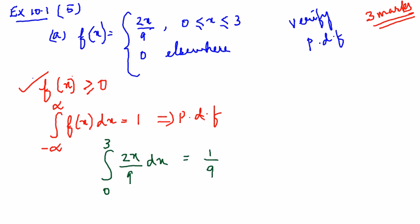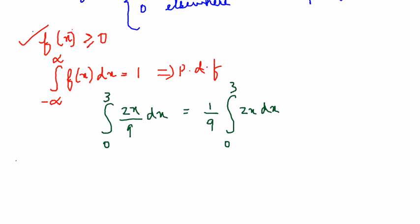Let's take 1 by 9 which is a constant outside, 0 to 3, 2x dx. 2 can also be taken outside. So it will be 2 by 9 into what is x, the integration of x is x square by 2 between the limit 0 and 3.